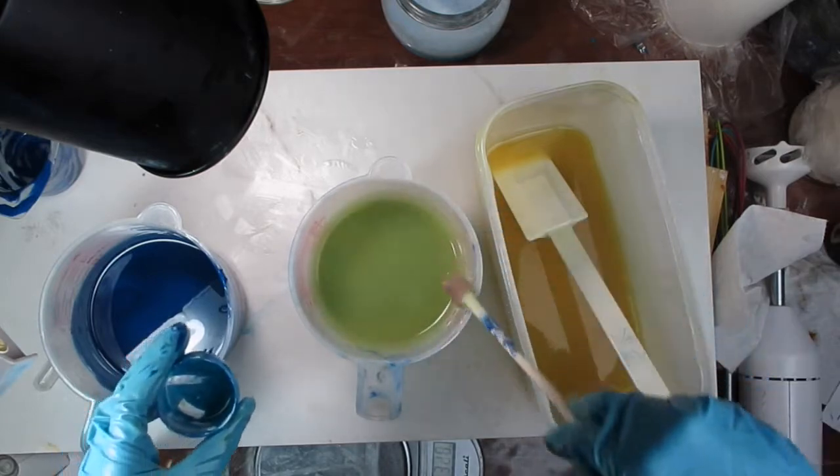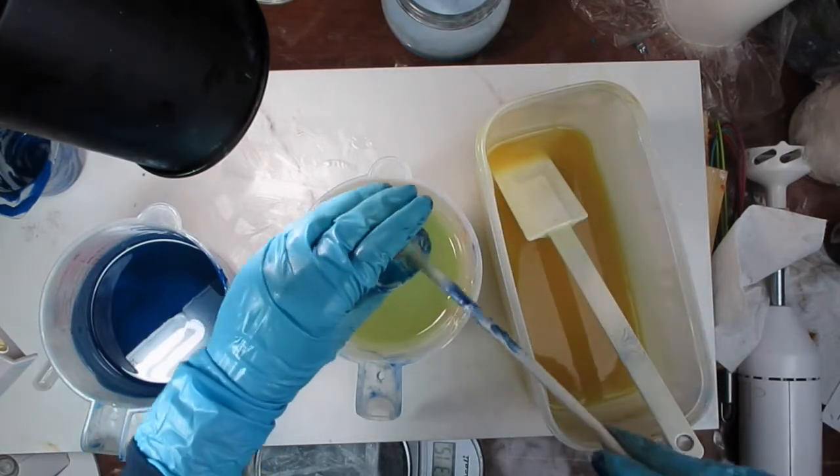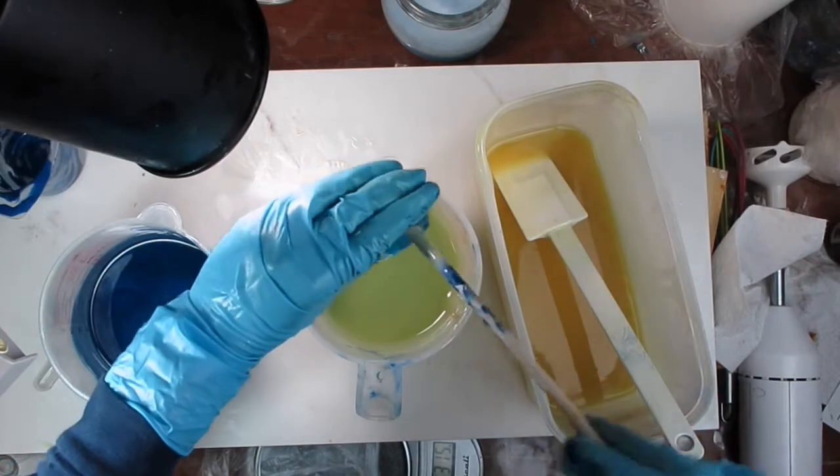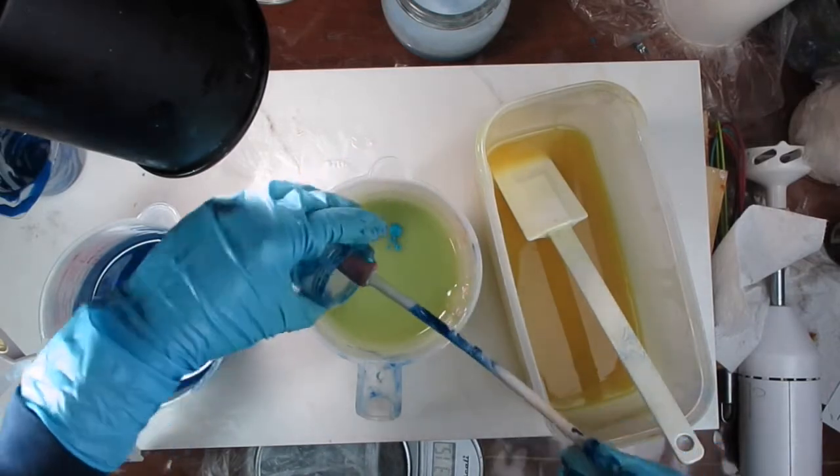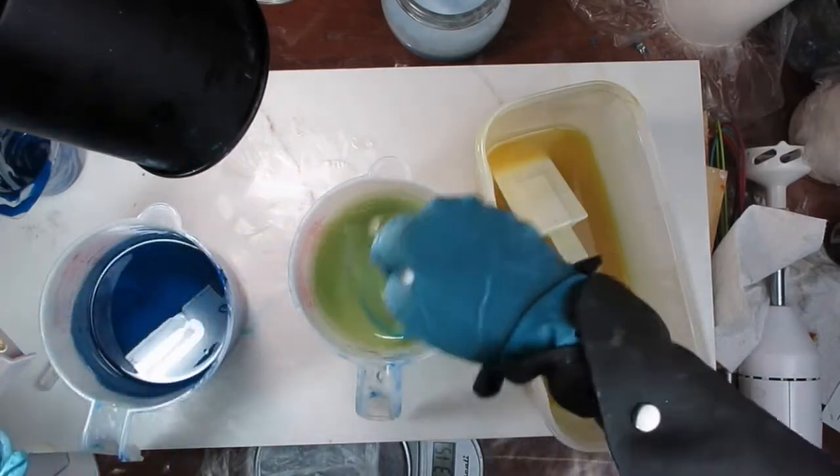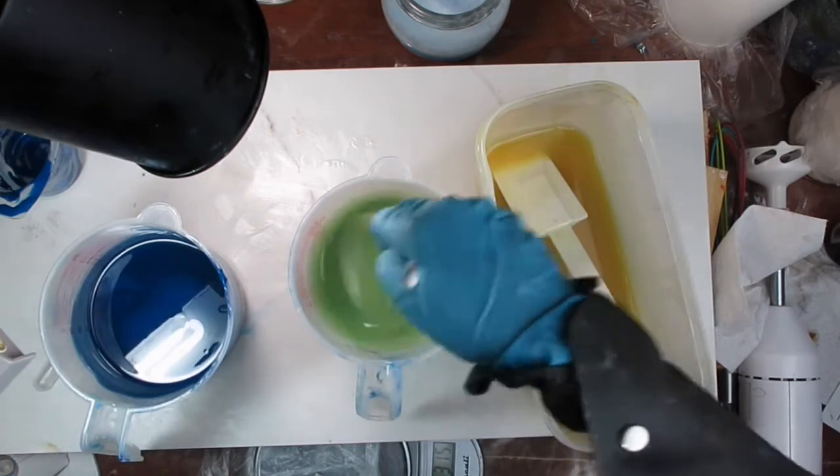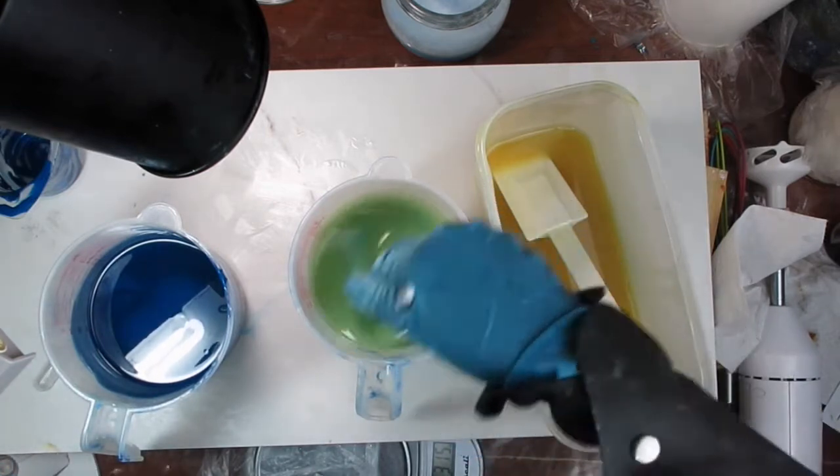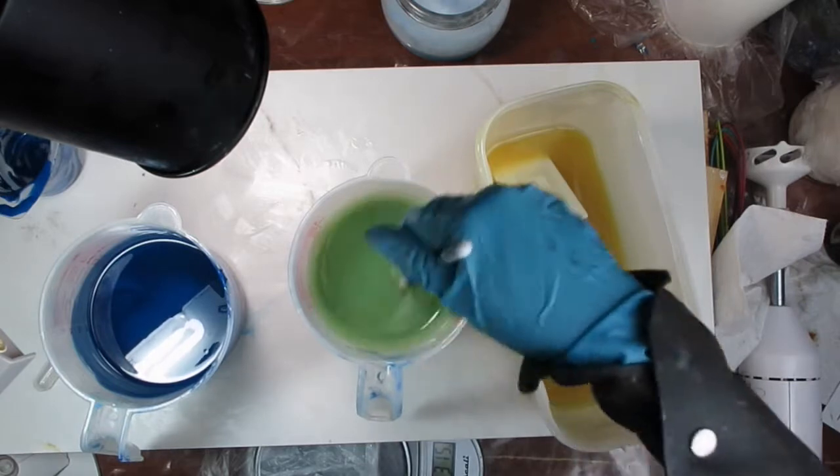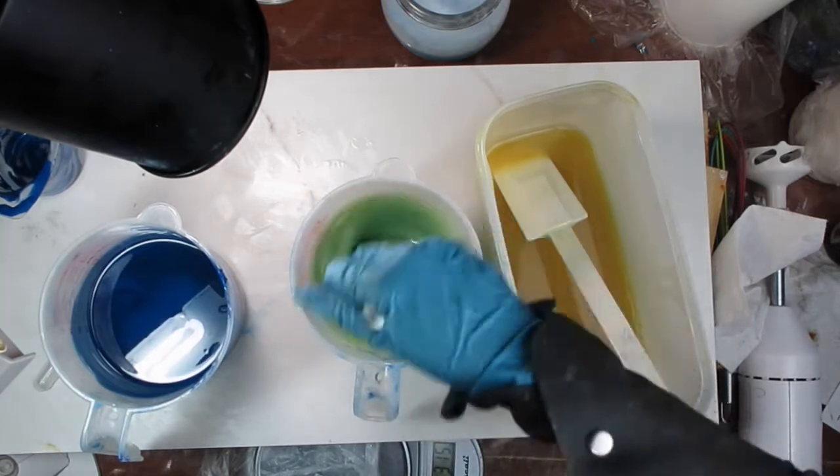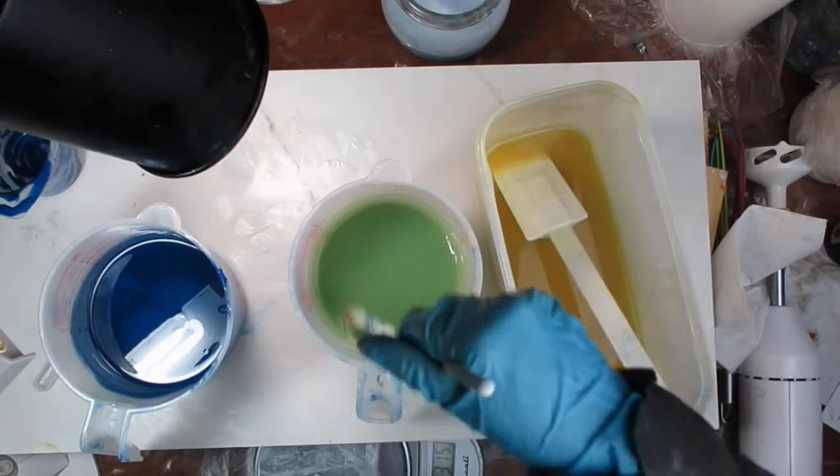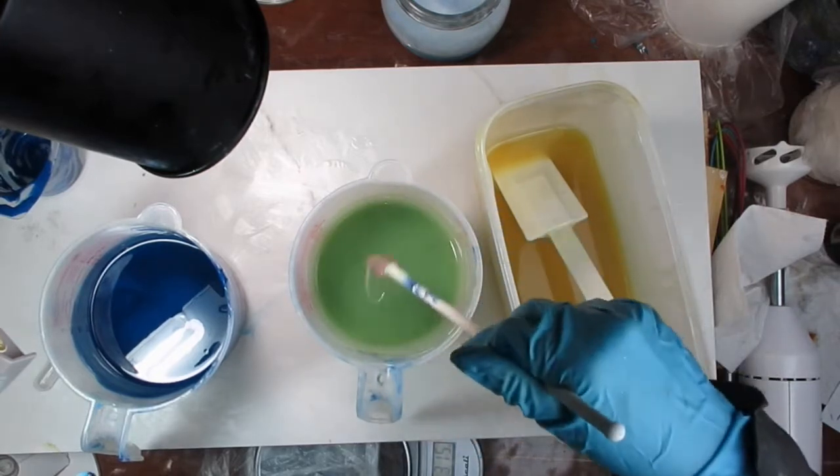In hindsight I should have used a blue mica that was a well behaving mica instead of the ultramarine blue pigment because I am aware and it has happened to me before where the ultramarine blue pigment causes the soap batter to reach a thicker trace even faster than other colorants from the same recipe in the same batch.